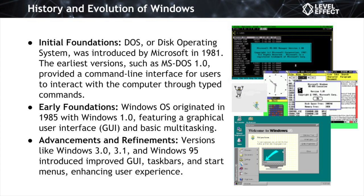There were years of iterations and refinements through subsequent versions such as Windows 3.0, 3.1, and Windows 95. Windows 95 was a bit of a game-changing release, bringing about significant advancements in the GUI. These releases introduced features like improved taskbars, start menus, and enhanced graphical elements. These refinements not only improved the aesthetics, but also enhanced the overall user experience and ease of navigation.